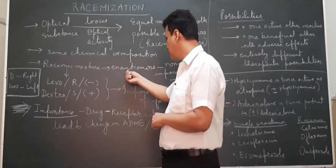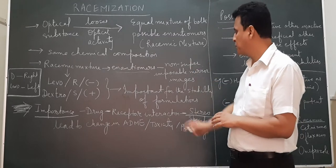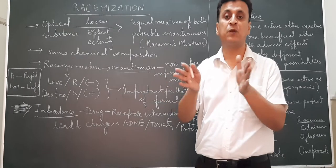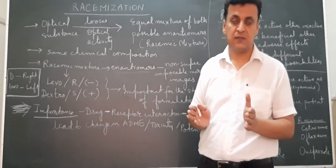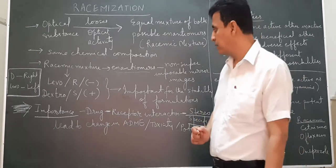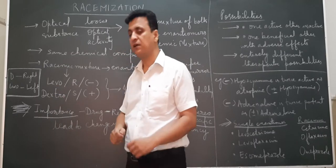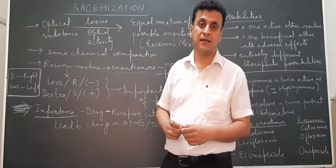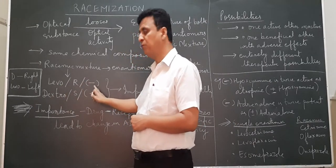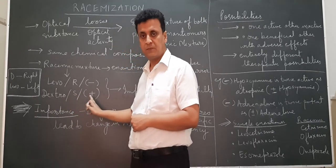The enantiomers which are formed in the racemic mixtures are non-superimposable mirror images. These are non-superimposable mirror images.